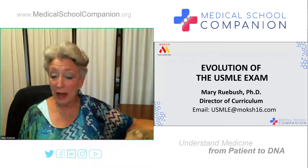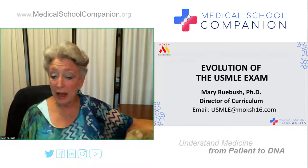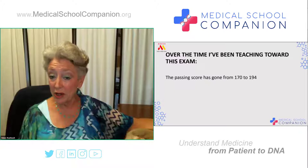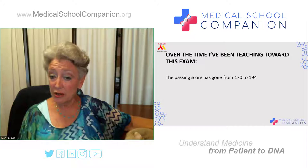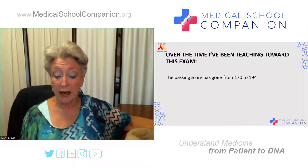Over the time that I've been doing this, I have found that the passing score has risen consistently — it's gone from 170 to 194 at the current time. And as international medical graduates, you're going to want to do significantly better than that simple passing score. To pass is one thing, but to get into the residency that you truly want, you're going to need a significantly higher level than that.